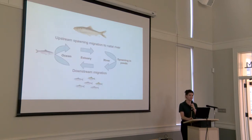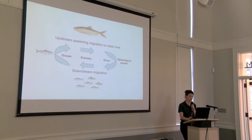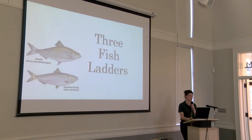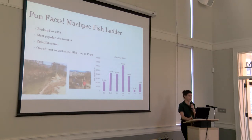Herring are anadromous — they live in salt water but spawn in fresh water, hence migrating upstream during spring to spawn in the ponds and rivers. There are two species: blueback and alewives, which look extremely similar. Collectively they're called river herring and that's what the whole program is for. We have three active runs in town, which can be very challenging — a lot of towns only have one.